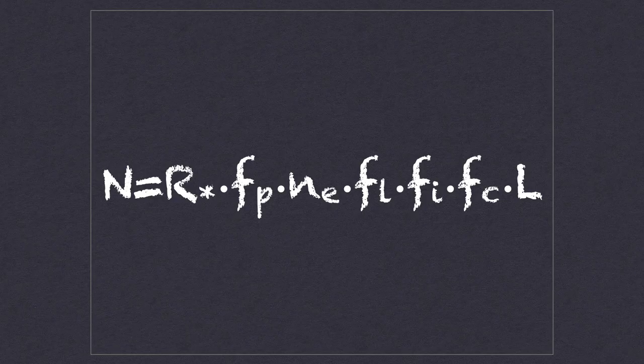Fc: the fraction of civilizations that communicate by radio. And lastly, L: the mysterious longevity factor. When we multiply all of these together, we get N, the number of alien civilizations.